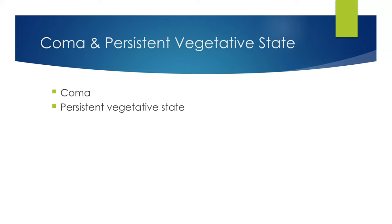A coma is a prolonged deep state of unconsciousness lasting days or even years; the patient cannot be aroused and may or may not have decreased brain stem reflexes. A persistent vegetative state results from higher cerebral dysfunction — the person does not purposefully respond to stimuli, is unaware of the environment, and has no cognition. They may grimace, cry, or laugh, but these actions are not in relation to the world around them. Neither of these patients can obey commands or purposely respond to stimuli.